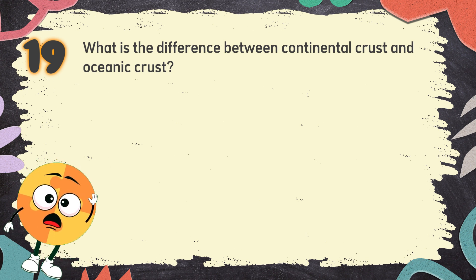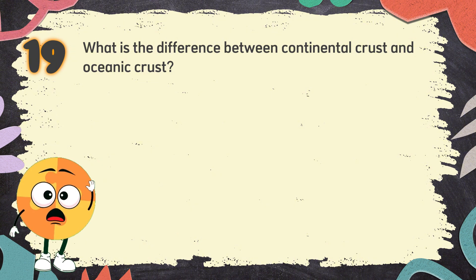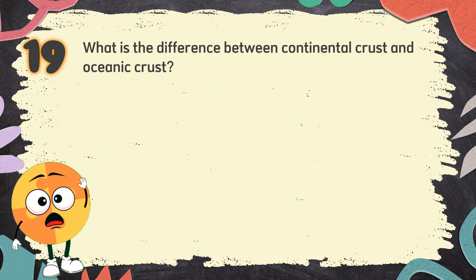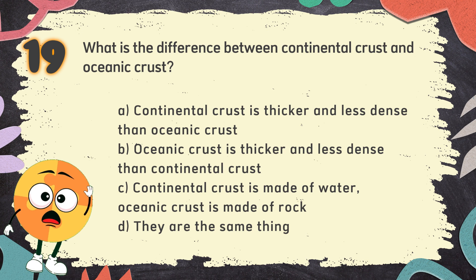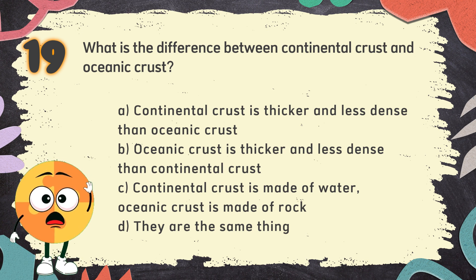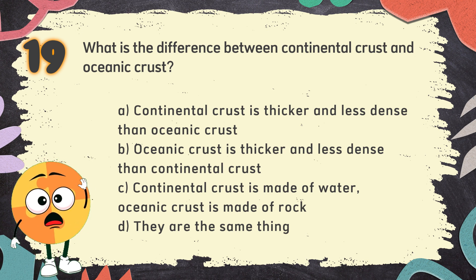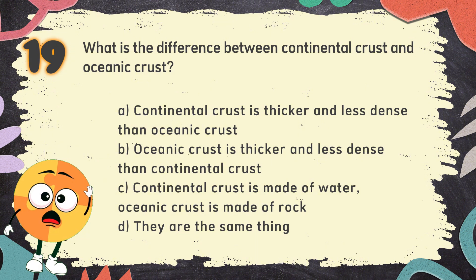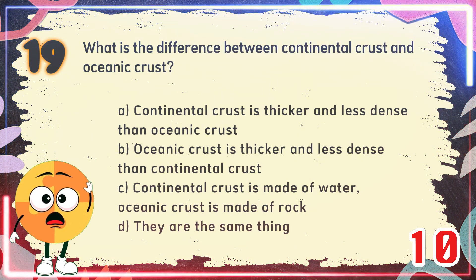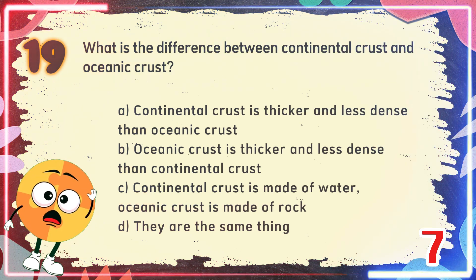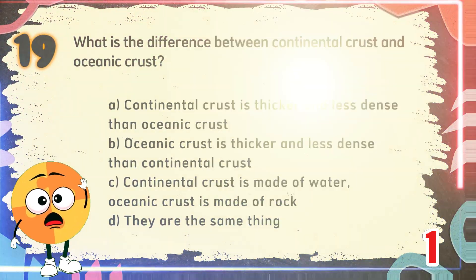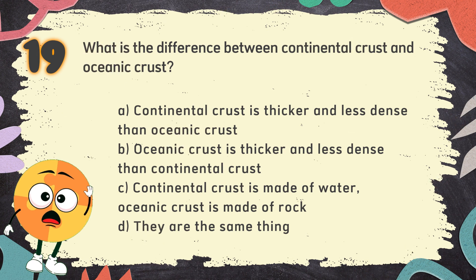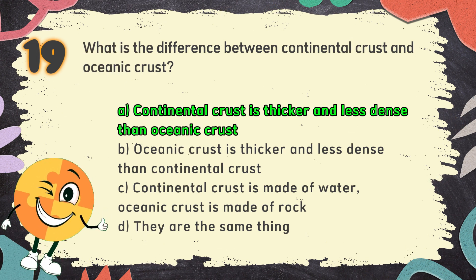Number 19. What is the difference between continental crust and oceanic crust? The choices are: A. Continental crust is thicker and less dense than oceanic crust, B. Oceanic crust is thicker and less dense than continental crust, C. Continental crust is made of water, oceanic crust is made of rock, D. They are the same thing. The correct answer is A. Continental crust is thicker and less dense than oceanic crust.